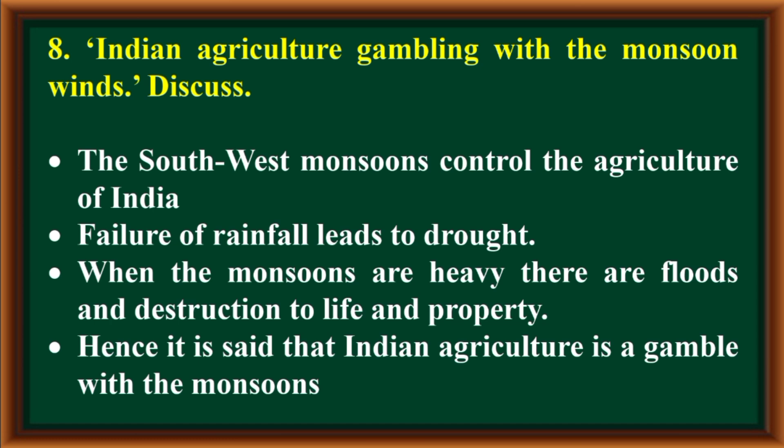Indian agriculture is a gamble with the monsoon winds — discuss. The southwest monsoon controls the agriculture of India. Failure of rainfall leads to drought. When the monsoons are heavy, there are floods and destruction to life and property. Hence it is said that Indian agriculture is a gamble with the monsoon.